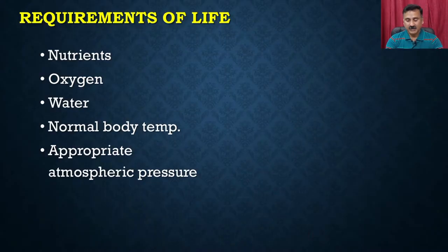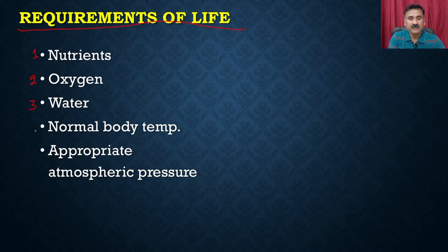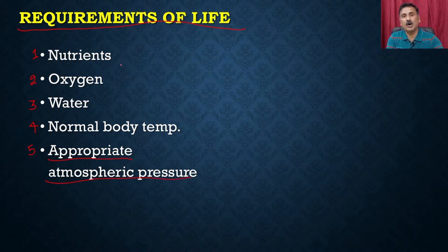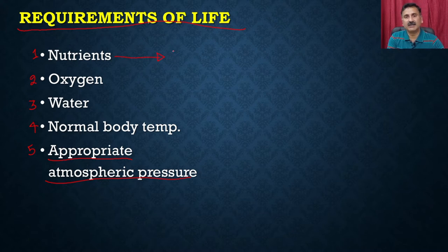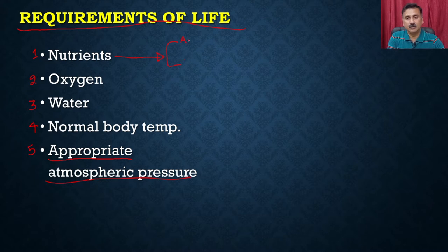If you see what the requirement of life is: it requires nutrients, it requires oxygen, it requires water, it requires normal body temperatures, and it also requires appropriate atmospheric pressure, because all of these parameters have to be optimal for the organism to actually survive. Talking about nutrients, the mode of nutrition can be of two types — it could be autotrophic or heterotrophic.